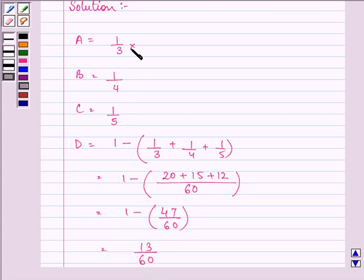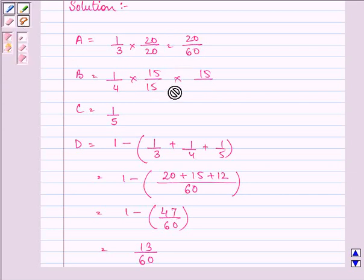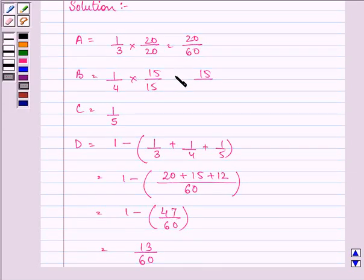Let us convert all of them also into having a denominator as 60. So for this we need to multiply the numerator and denominator by 20 to get in the denominator 60. Here it will be by 15. And here it will be by 12.